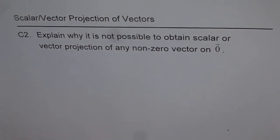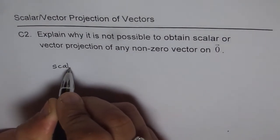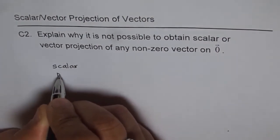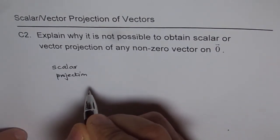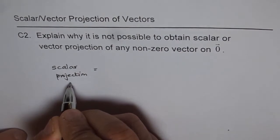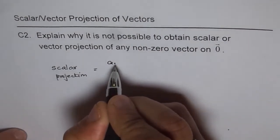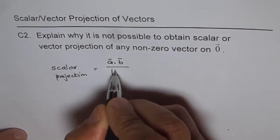Let me first give you an answer with reference to the formula itself. So what is the formula for scalar projection? We say scalar projection of vector A on B is written as the dot product of A and B over the magnitude of vector B.